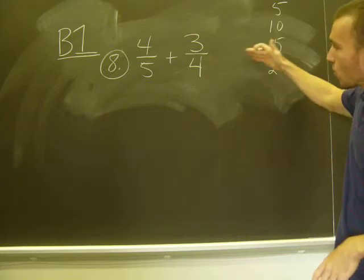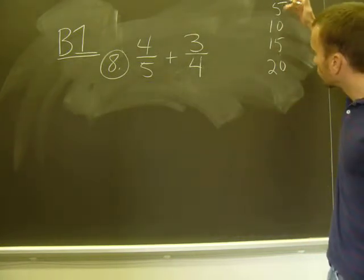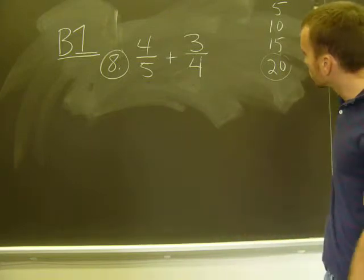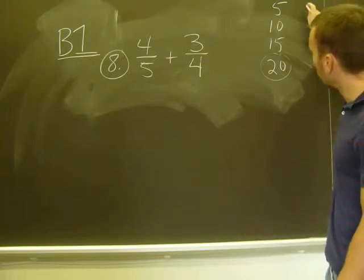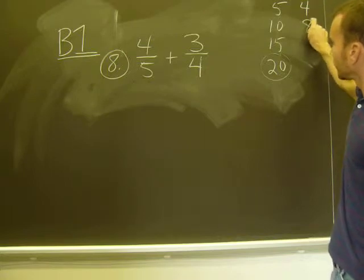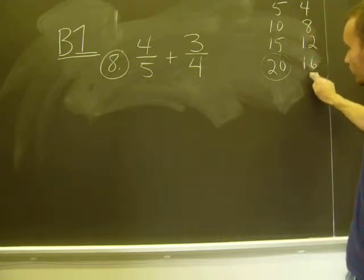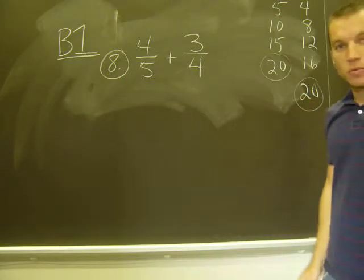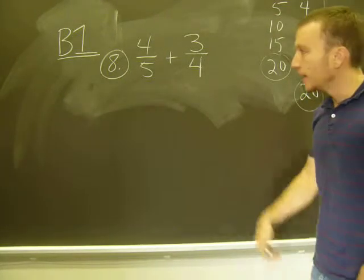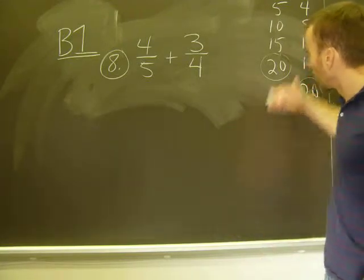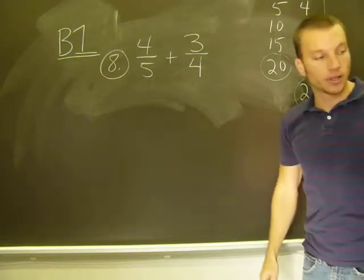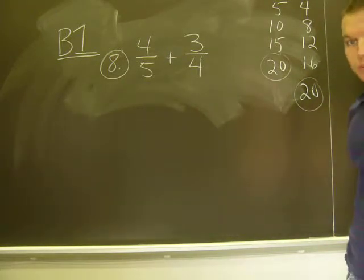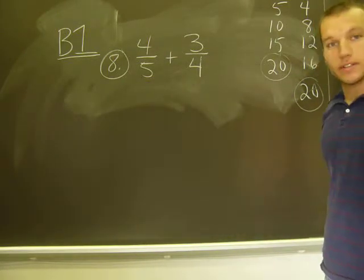Right, so 4 won't go into that, that, but 4 will divide into that. Another thing you can do is list all the factors of 4 if you want, and continue that list until you find one that's common among the two. If you have trouble finding that common denominator, do something like that. It might help you find that least common denominator, the first one you come to that both 5 and 4 will go into evenly.